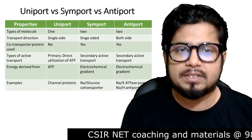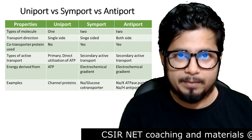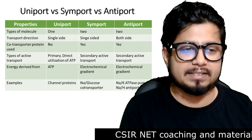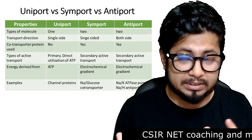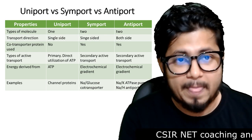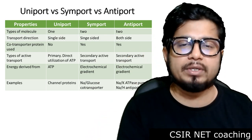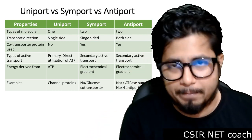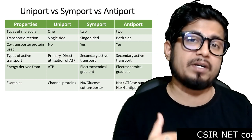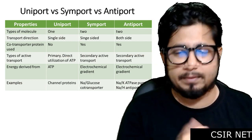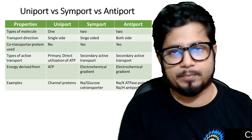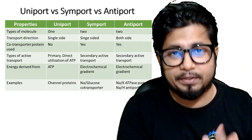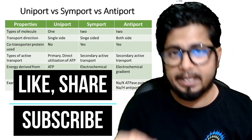Then comes the examples. Uniport utilizes channel proteins, while symport utilizes the sodium-glucose co-transporter, where sodium and glucose are both transported in the same direction. An example of antiport is the sodium-potassium ATPase pump, where sodium and potassium are transported in two opposite directions. Similarly, the sodium-proton pump also pumps sodium and proton in opposite directions across the membrane. So that's the difference between uniport, symport and antiport.